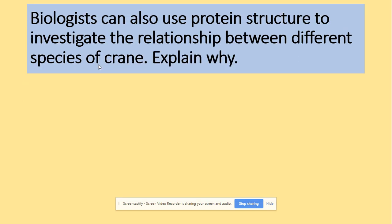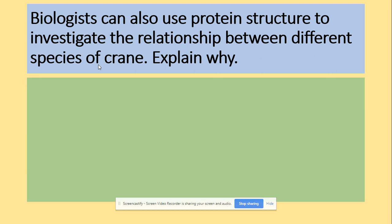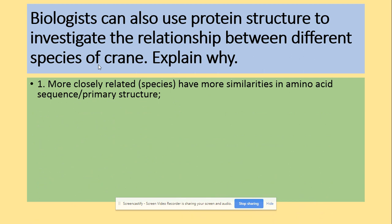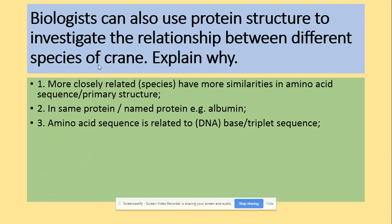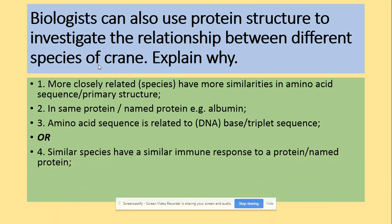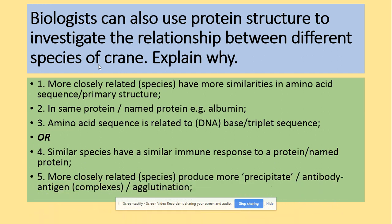Biologists can use protein structure to investigate relationships between different species. More closely related species have more similarities in amino acid sequence — in the primary structure of the same protein. The amino acid sequence is related to DNA base sequence. Similarly, related species have a similar immune response to a protein, and more closely related species produce more positive antibody-antigen complexes.